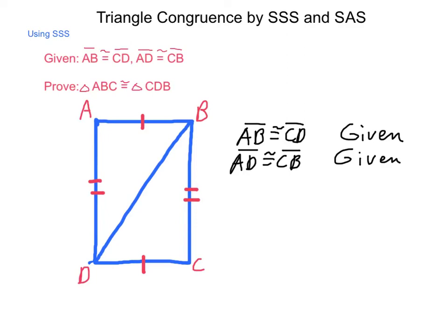What we need, in order to prove the congruence here, by side-side-side, is to say that BD is congruent to DB. And since BD and DB are the same, we can say that that is by the reflexive property, which simply states that an item is congruent to itself.